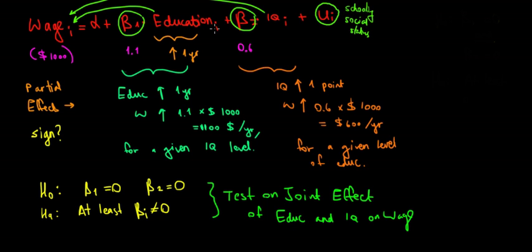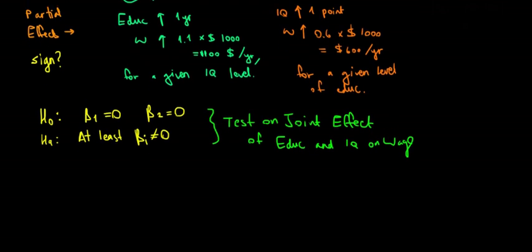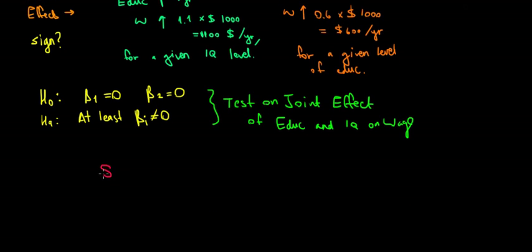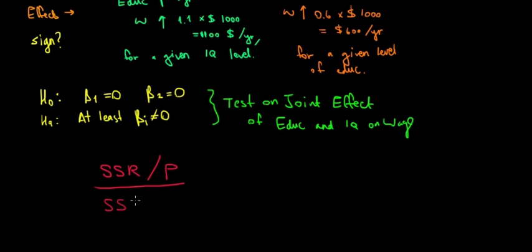We want to know the ratio of the sum of squared differences explained by our regression line — which we call SSR — relative to the number of variables we're using, divided by the sum of squared differences that are unexplained (the error term), divided by the number of observations minus P minus one. This ratio is tested with an F value, so we're doing an F test.